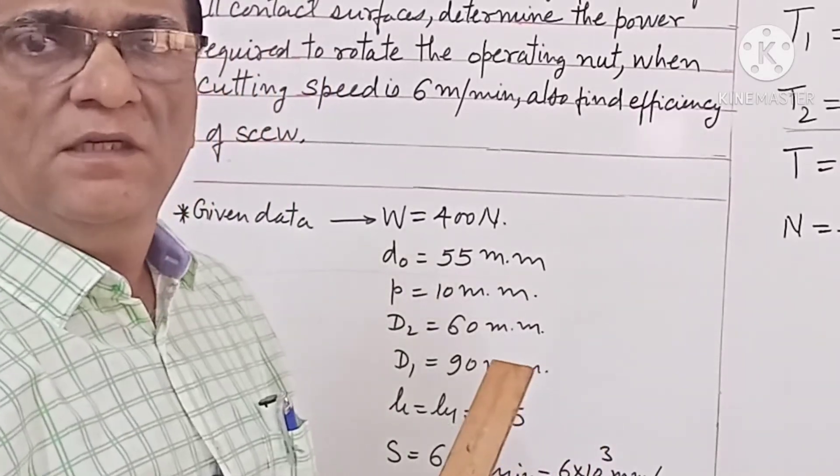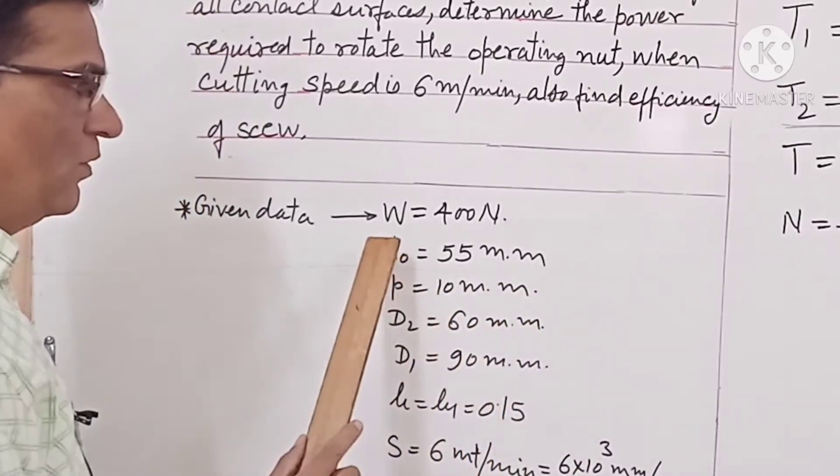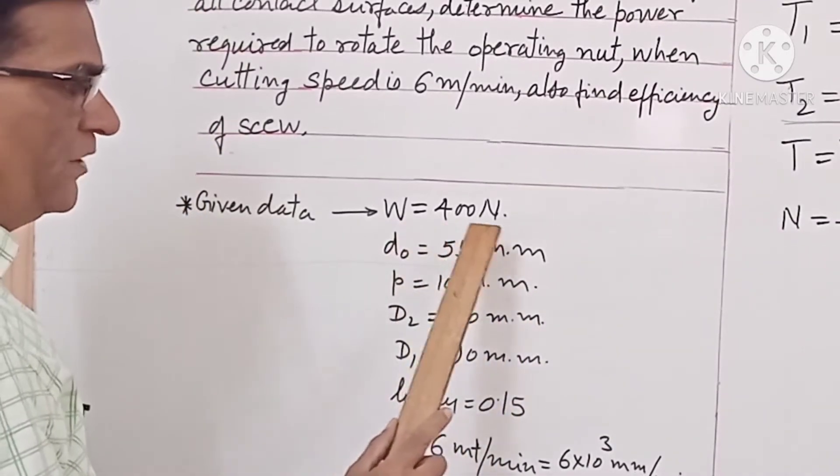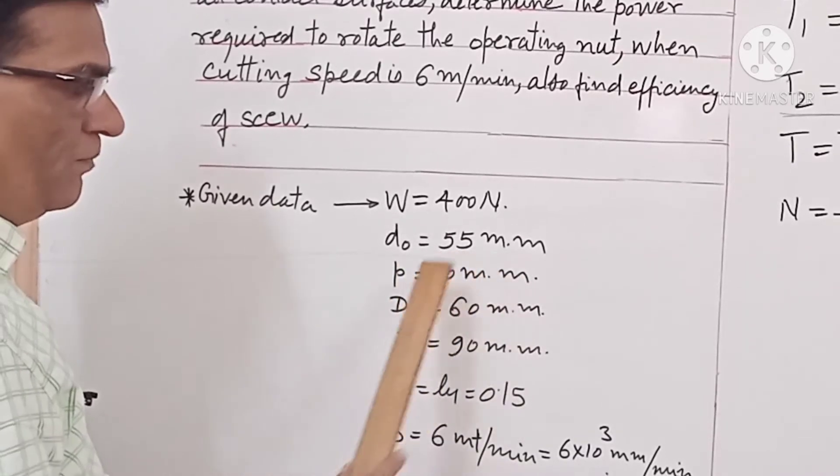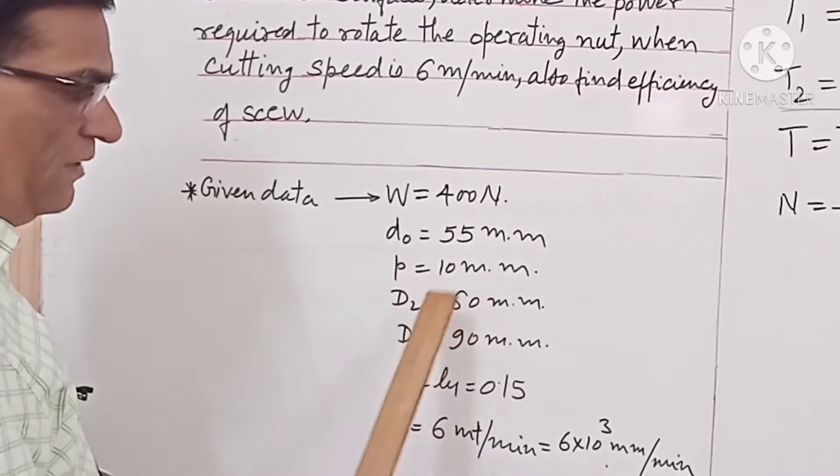Now we will write down the given data. Load W is equal to 400 N. Outside diameter DO is equal to 55 mm. Pitch P is equal to 10 mm.